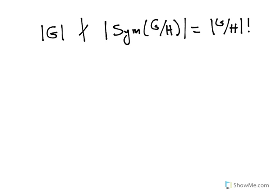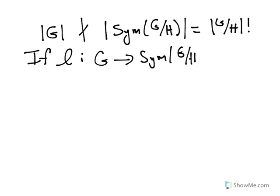If G doesn't divide that, then we know that that map L must not be injective. If L from G to sym G mod H is injective, or one-to-one,